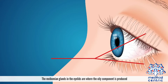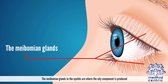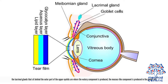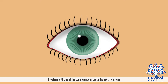The meibomian glands in the eyelids are where the oily component is produced. The lacrimal glands that sit behind the outer part of the upper eyelids are where the watery component is produced. The mucus-like component is produced in the goblet cells. Problems with any of these components can cause dry eye syndrome.